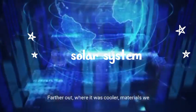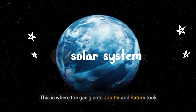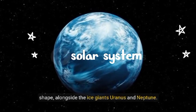Farther out where it was cooler, materials we recognize as ice, liquid, or gas gathered. This is where the gas giants Jupiter and Saturn took shape, alongside the ice giants Uranus and Neptune.